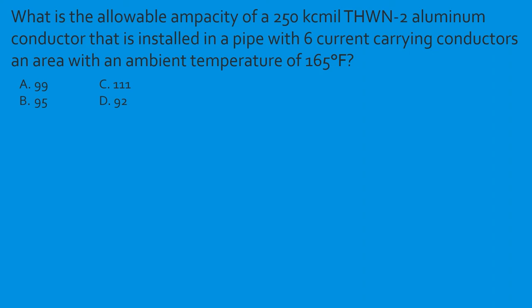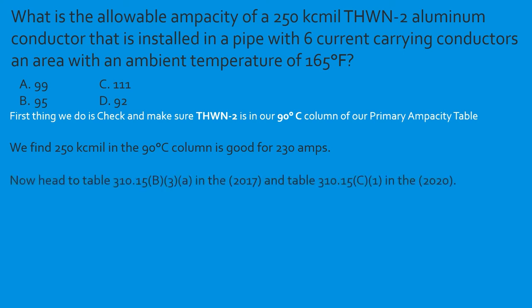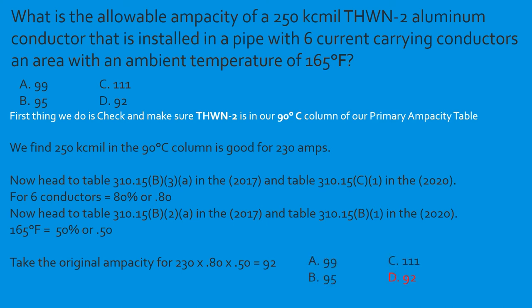Question: What is the allowable ampacity of a 250 kcmil THWN-2 aluminum conductor installed in a pipe with six current-carrying conductors in an area with an ambient temperature of 165°F? Confirm insulation is in the 90°C column. 250 kcmil aluminum is 230 amps. Six conductors — bundling adjustment factor is 0.80. Temperature at 165°F — correction factor is 0.50. So: 230 × 0.80 × 0.50 = 92 amps. Select D.